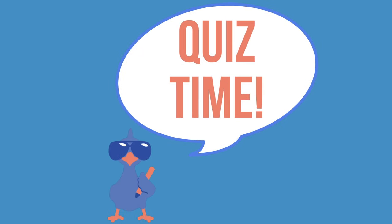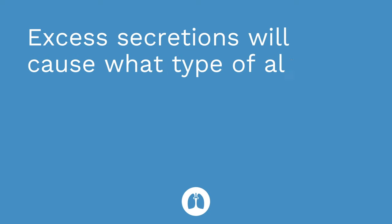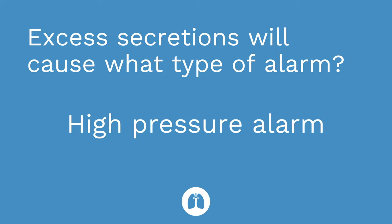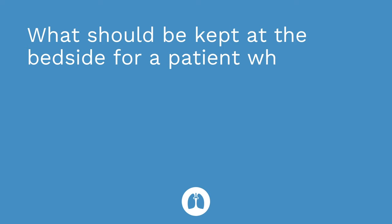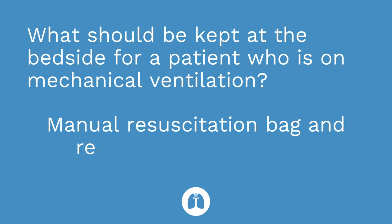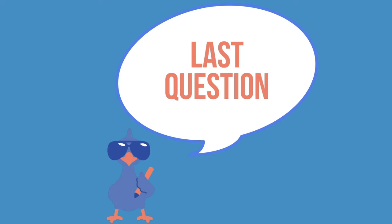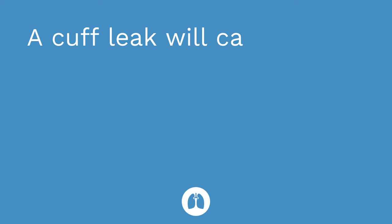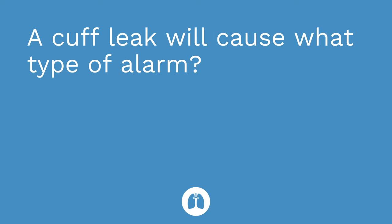Time for a quiz — three questions on mechanical ventilation. First question: excess secretions will cause what type of alarm? A high-pressure alarm — correct. Question two: what should be kept at the bedside for a patient on a mechanical ventilator? The answer is a manual resuscitation bag as well as reintubation equipment. Question three: a cuff leak will cause what type of alarm? The answer is a low-pressure alarm.